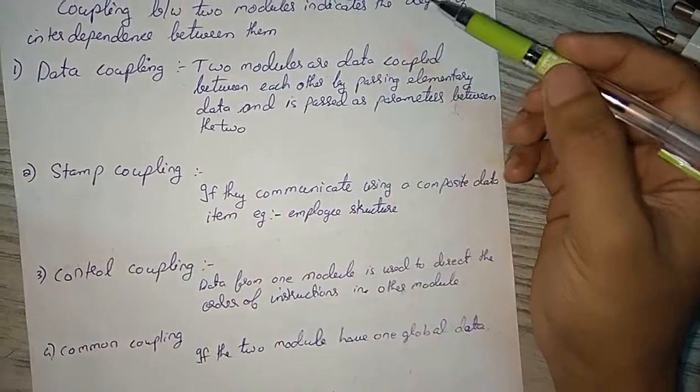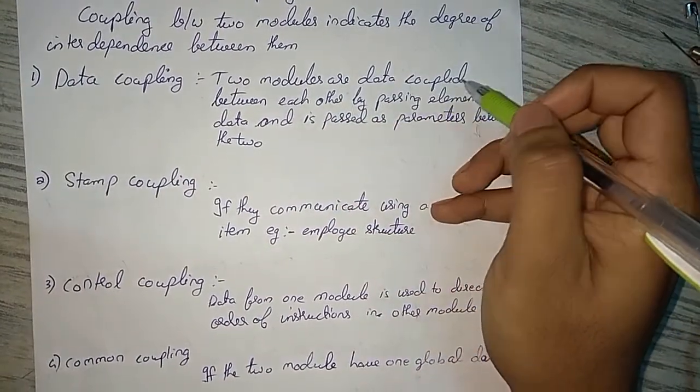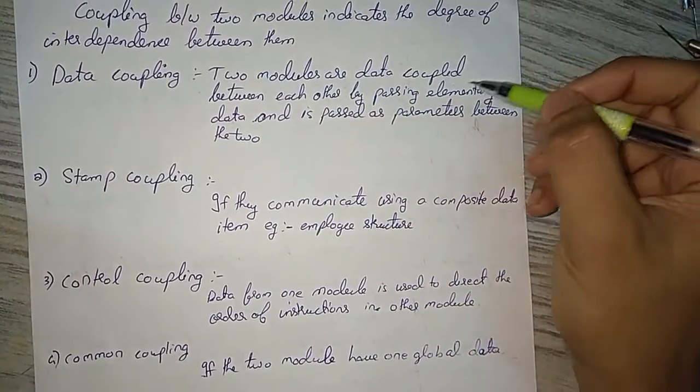We have five types of coupling. The first one is data coupling. If two modules are data coupled, then they are passing elementary data between those two modules.